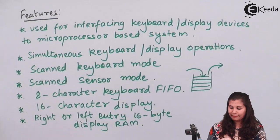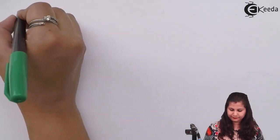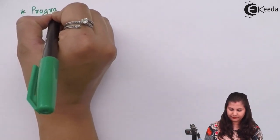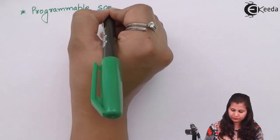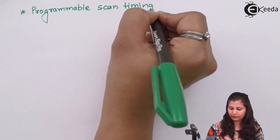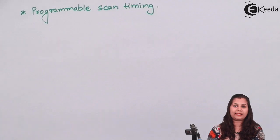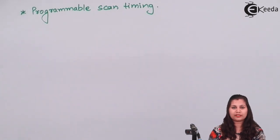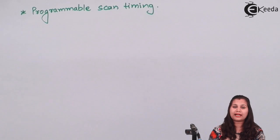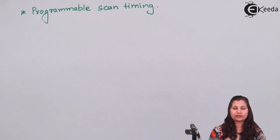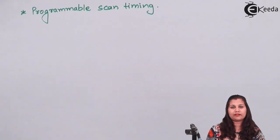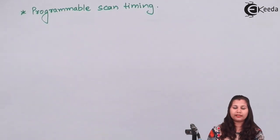The next feature is programmable scan timing. The 8279 scans the keyboard and display devices, and this scan time can be programmed using software instructions. That is why it is known as a programmable keyboard display controller — programs and command words can be written into this 8279 to modify it or use it for various applications. These were the features of the 8279.